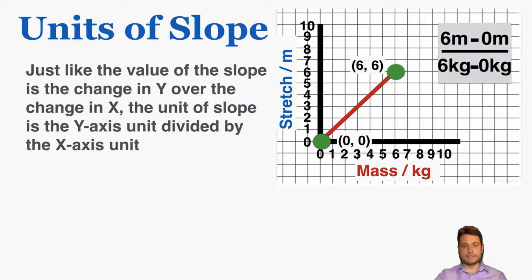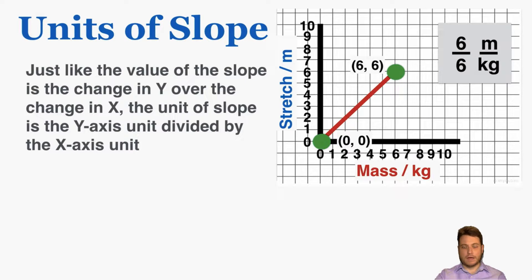As an example, I have a graph that has mass on the x-axis measured in kilograms and stretch on the y-axis measured in meters. So if I take the slope of this graph, the unit of my final answer will be meters per kilogram. In this case, that's six over six meters per kilogram, or one meter per kilogram.